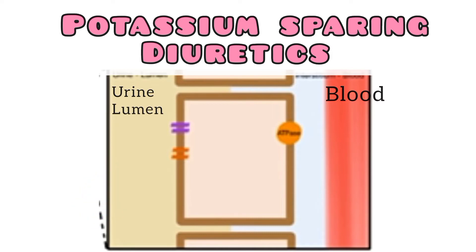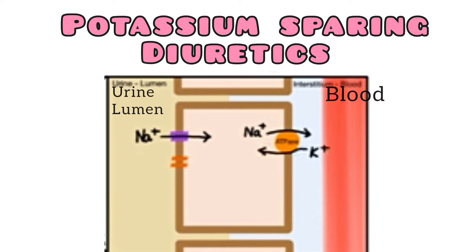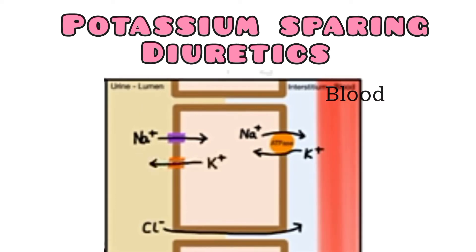In normal conditions: sodium enters the cell through the sodium channel, and then it is transported by sodium-potassium ATPase into the bloodstream in exchange for potassium. Because sodium entry predominates, the lumen has a negative electrical potential. Chloride moves to the bloodstream via the paracellular pathway, and this drives potassium out of the cell through the potassium channel.